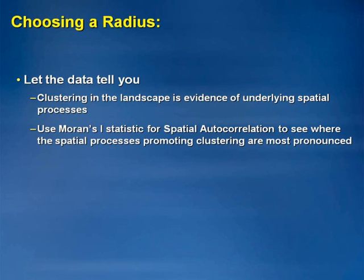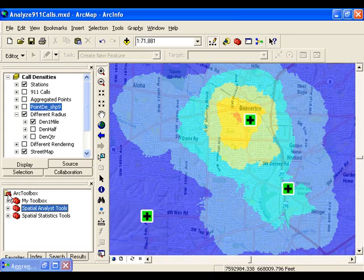Another way to decide what to use for the radius parameter is to let the data tell us. Whenever we see clustering in the landscape, we're seeing evidence of underlying spatial processes at work. We can determine the distance, or the spatial scale, where those spatial processes are most pronounced by running a global Moran's I for multiple distances. Global Moran's I is a tool found in the Spatial Statistics Toolbox under the Analyzing Patterns toolset. This tool returns a z-score, which is a measure of the intensity of spatial clustering. Usually, the z-score gets bigger as the distance increases, then peaks — and sometimes there's more than one peak. Each peak reflects a distance where the processes promoting spatial clustering are most pronounced. Generally, we're interested in that first peak. So let's walk through the Moran's I tool and choose a good radius.